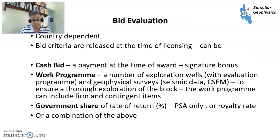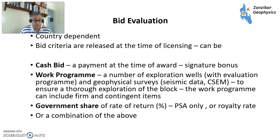Bid evaluation is obviously country dependent. There are two basic methods. The first is a cash bid — a straightforward bid of money at the time of award, also known as a signature bonus, payable when the licence is awarded. Or you can have a work programme, where you bid a number of exploration wells, an evaluation programme within the wells, geophysical surveys such as seismic data, CSEM (controlled source electromagnetic), to ensure thorough exploration of the block. The work programme can include firmer and contingent items and can be phased. In some PSAs you can also bid a rate of return for governments or a royalty rate, though most bids now are either cash bids or work programmes, or a combination.